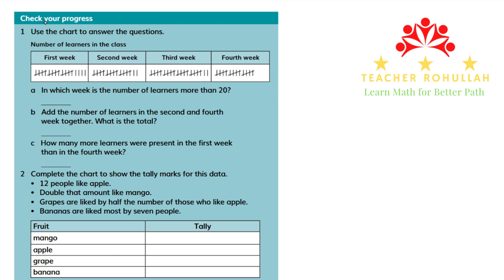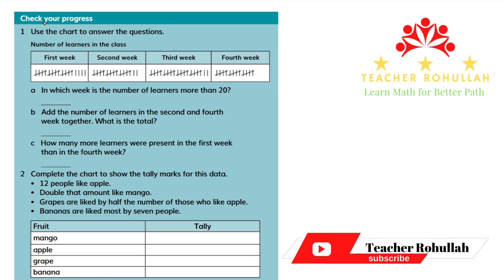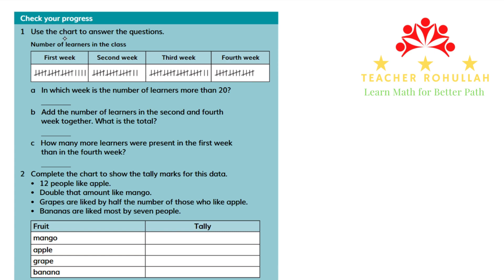Hello and welcome to today's lesson. In this lesson, I'm going to work on the last part of Unit 2 of Cambridge Primary Mathematics Learner's Book 3. This unit is about the tally chart and the frequency table. This part of Unit 2 is aimed to check students' understanding of the lesson and students' progress.